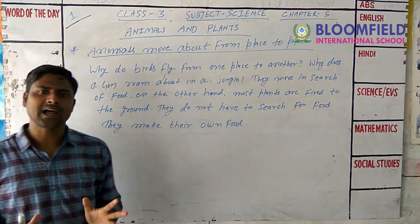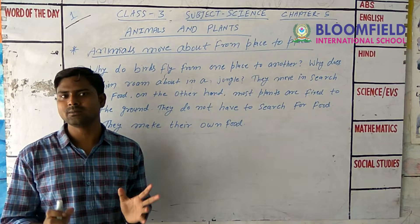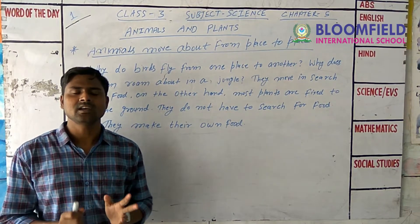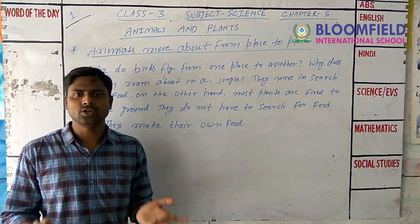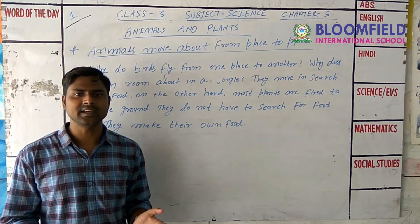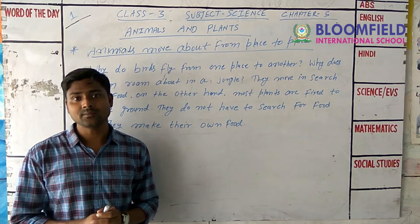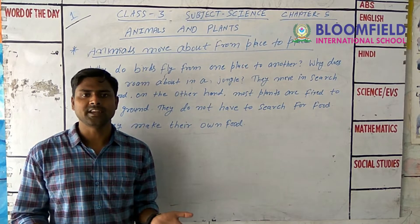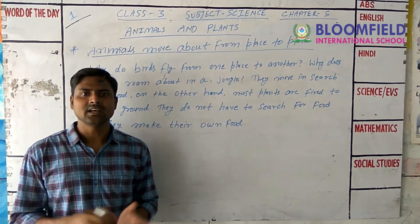Plants and Animals both are living things. Animals such as Lion, Tiger, Dog, and Cat — they can move, they can breathe, they can grow. And Plants such as Banana, Mango, and Banyan — they can also breathe and grow.